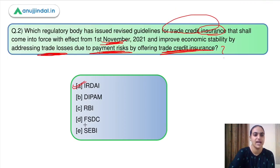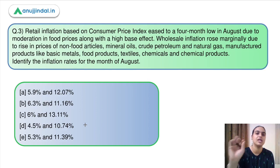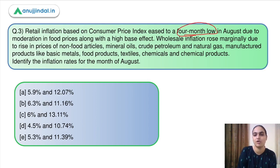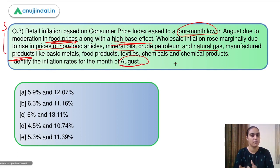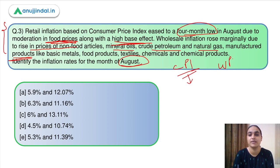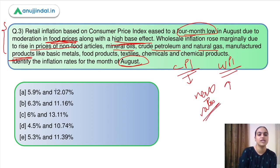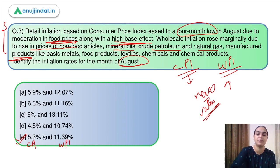Moving to question number 3: retail inflation based on the consumer price index eased to a 4-month low in August due to moderation in food prices along with a high base effect. Wholesale inflation rose marginally due to rise in prices of non-food items, mineral oil, crude petroleum, and manufactured products. The answer is option E — CPI was 5.3% in August and WPI was 11.39%.